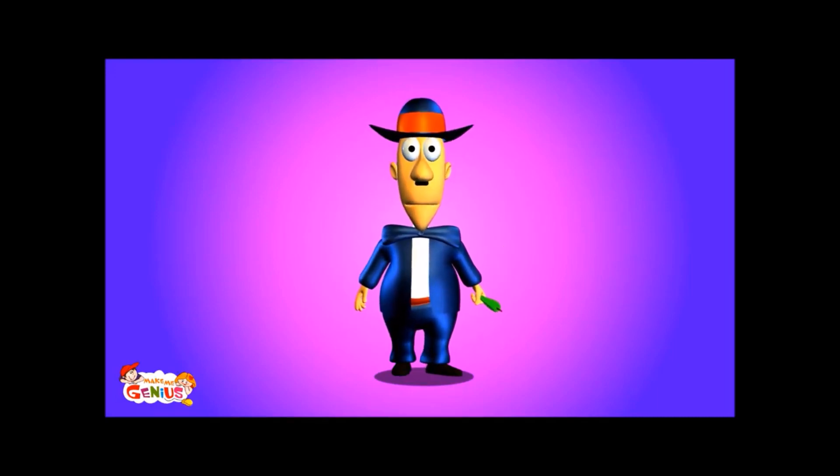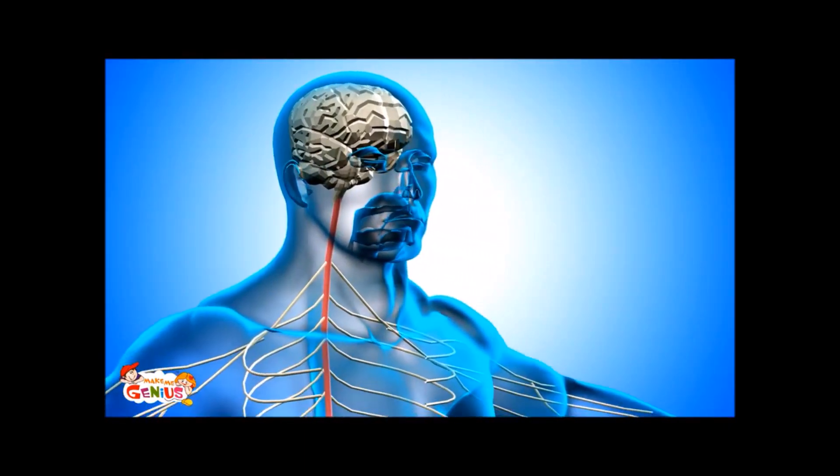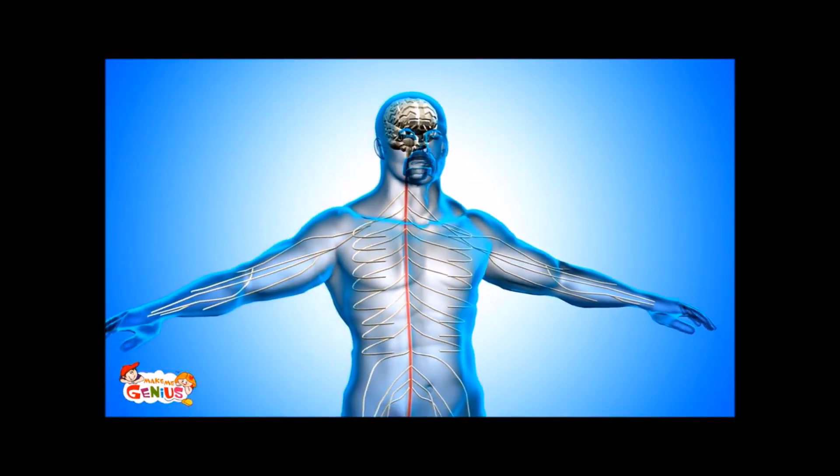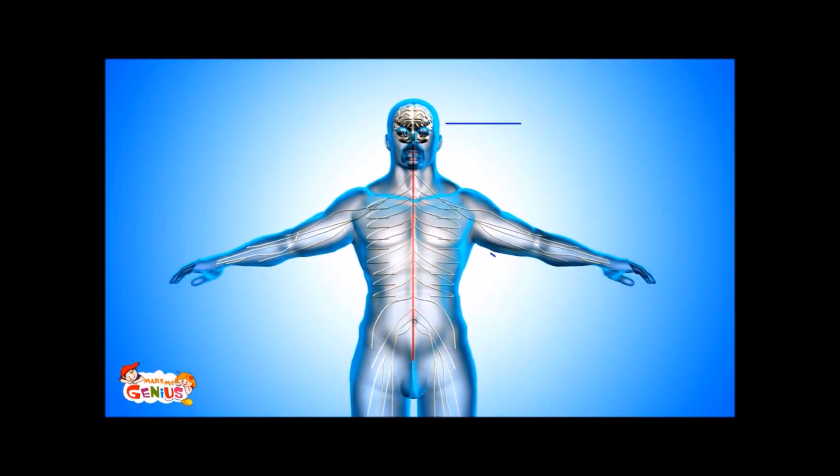But do you know what the nervous system is? Let me explain about the nervous system. The nervous system controls all the actions of our body. It has two parts, the central nervous system and the peripheral nervous system.